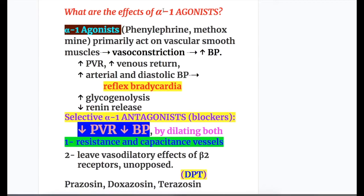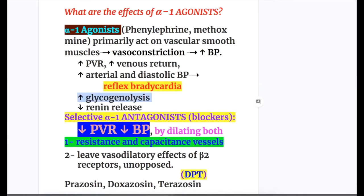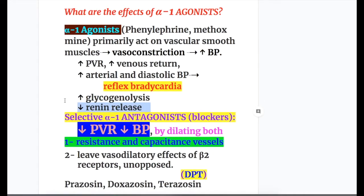Alpha-1 agonists like phenylephrine primarily act on vascular smooth muscle, causing vasoconstriction. They increase blood pressure, peripheral vascular resistance, venous return, and arterial and diastolic blood pressure, but they cause reflex bradycardia. They also increase glycogenolysis. The only function decreased by alpha-1 agonist stimulation is renin release.